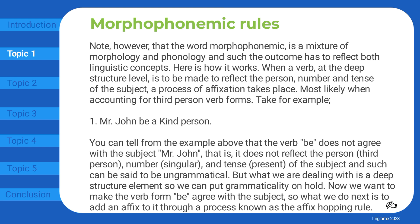You can tell from the example above that the verb 'be' does not agree with the subject 'Mr. John' — that is, it does not reflect the person (third person), number (singular), and tense (present) of the subject, and as such can be said to be ungrammatical. But what we are dealing with is a deep structure element, so we can put grammaticality on hold.